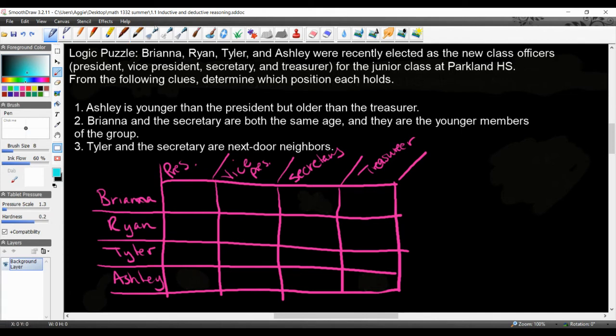So let's go ahead and read through this. It says Brianna, Ryan, Tyler, and Ashley were recently elected as the new class officers: president, vice president, secretary, and treasurer for the junior class at Parkland High School. From the following clues, determine which position each of them holds. So we have these three clues.